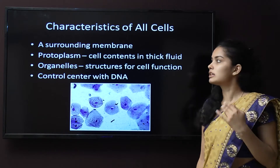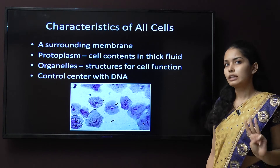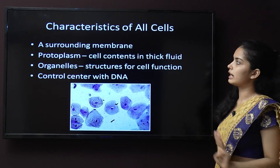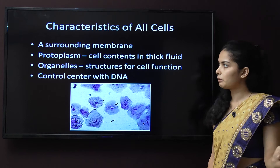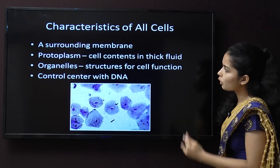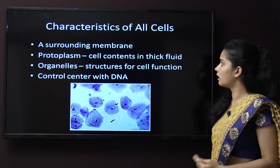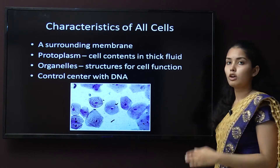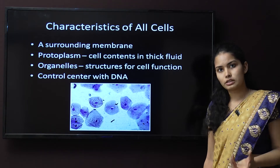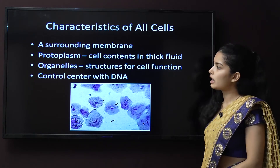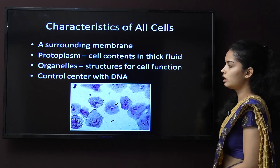The characteristics of all cells are: the cell has mainly three main parts — a surrounding membrane, that is the plasma membrane; the protoplasm, which is the thick fluid contained within the cell; and the organelles, which are the structures for cell function such as mitochondria. There is also a control center within the DNA.